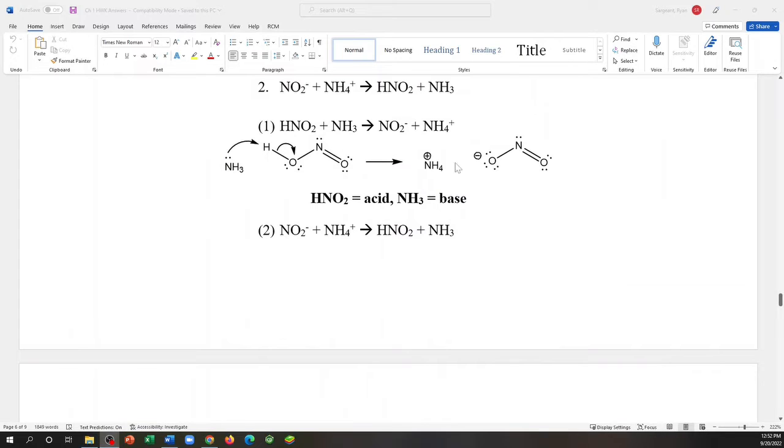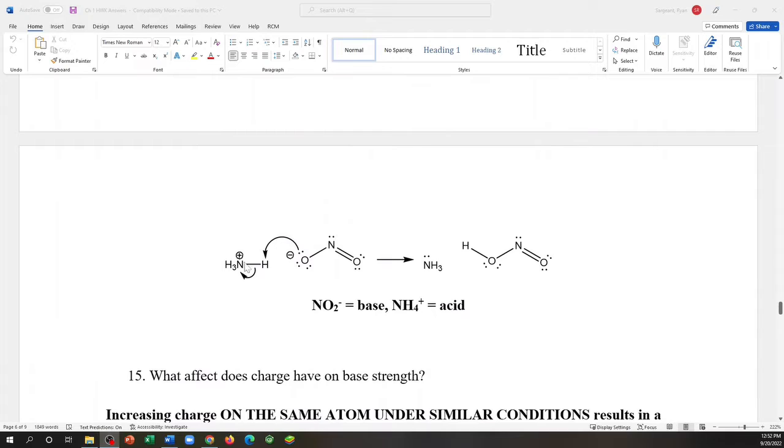In the reverse reaction, I just take these products and I basically just flip this whole reaction. So now the nitrite ion is acting as a base to go rip a hydrogen off of ammonium to produce ammonia and nitrous acid.